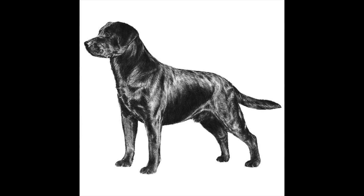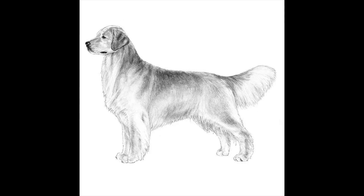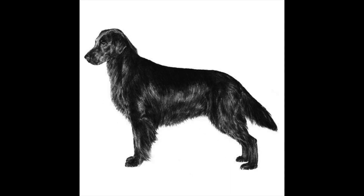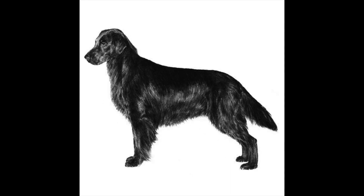These proteins also control a dog's appearance. For example, a change of just one letter can be the difference between a dog with a short coat and a dog with a long coat, or the difference between a dog with a yellow coat and a dog with a black coat.